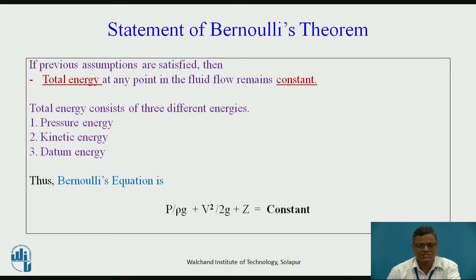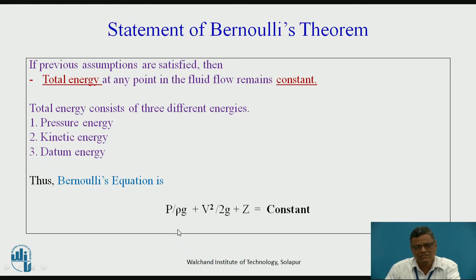If these assumptions are satisfied, the total energy at any point in a fluid flow remains constant. The forms of energy present are: pressure energy, kinetic energy, and datum energy. Bernoulli's equation is written as P/ρg + V²/2g + z = constant. These energy terms are represented as heads with units of meters — pressure head, kinetic head, and datum head — and their summation is constant.